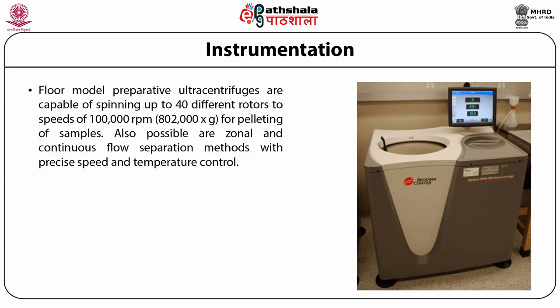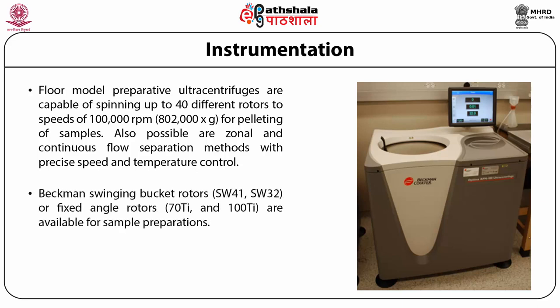The Fluor Model Preparative Ultracentrifuge is capable of spinning up to 40 different rotors to a speed of 100,000 rpm, equivalent to 800,000 g, for pelleting of samples. Zonal and continuous flow separation methods are also possible with precise speed and temperature control. Beckman swinging bucket or fixed angle rotors are available for this type of sample preparation.